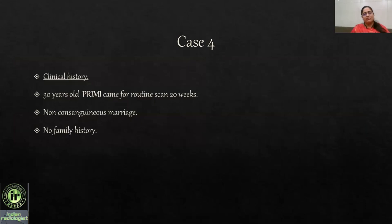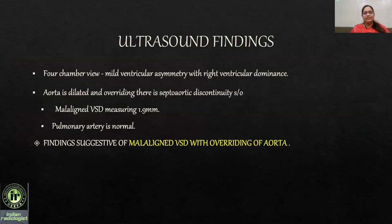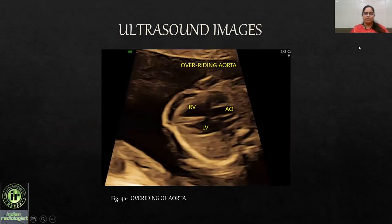Case 4: A 30-year-old primigravida came for a routine scan at 20 weeks. Non-consanguineous marriage, no family history. The four chambers showed mild asymmetry with right ventricular predominance. The aorta was dilated and overriding, with septo-aortic discontinuity and a malaligned VSD of 1.9 mm. The pulmonary artery was normal. A five-chamber view showed the aorta overriding and doubly committed to both ventricles. The diagnosis was isolated malaligned VSD with overriding of the aorta. If the pulmonary artery had been smaller, a diagnosis of tetralogy of Fallot would have been made, but that was not the case.